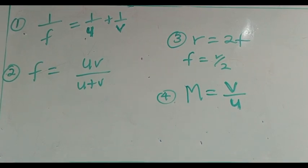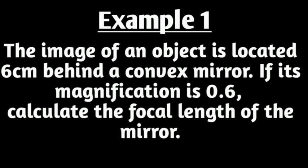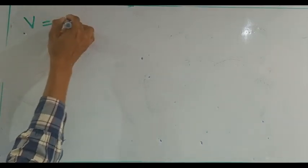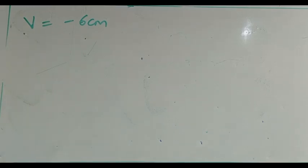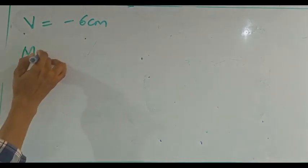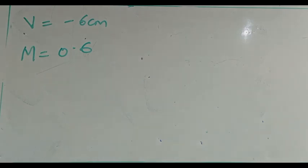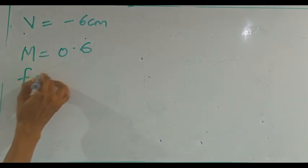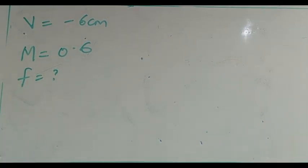Let's apply this in solving problems. Example 1: The image of an object is located 6 cm behind a convex mirror. If its magnification is 0.6, calculate the focal length of the mirror. Since it is a convex mirror, v = −6 cm and magnification m = 0.6. We are looking for f.